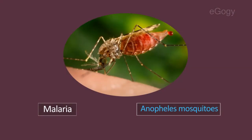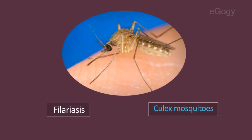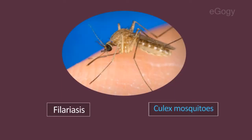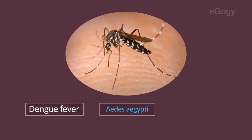Malaria is transmitted by Anopheles mosquitoes, and filariasis is transmitted by Culex mosquitoes. Aedes aegypti spreads dengue fever and chikungunya.